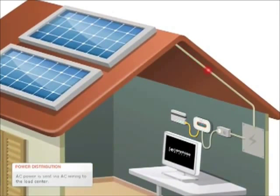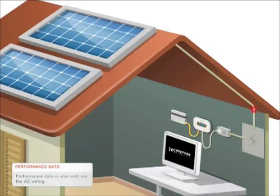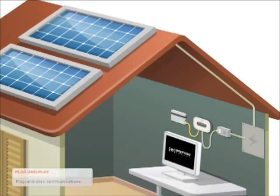AC power is sent from each microinverter through standard AC wiring to the load center. Data about the performance of the module and the microinverter is collected in 5-minute intervals and also sent via the same AC wiring. This plug-and-play approach means you get communication integrated in the Enphase system without any additional wiring.